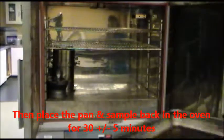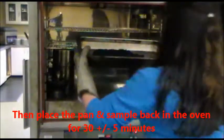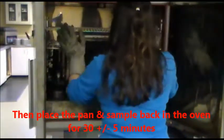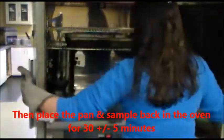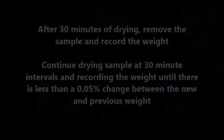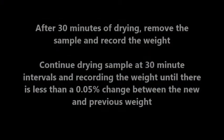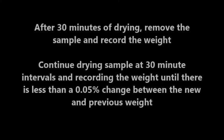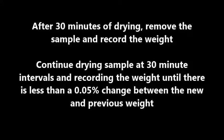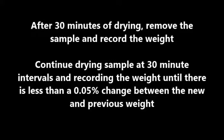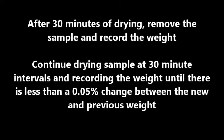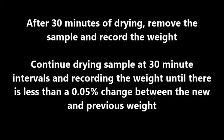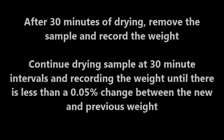Then place the pan and sample back in the oven for 30 ± 5 minutes. After 30 minutes of drying, remove the sample and record the weight. Continue drying the sample at 30-minute intervals and recording the weight until there is less than 0.05% change between the new and previous weight.